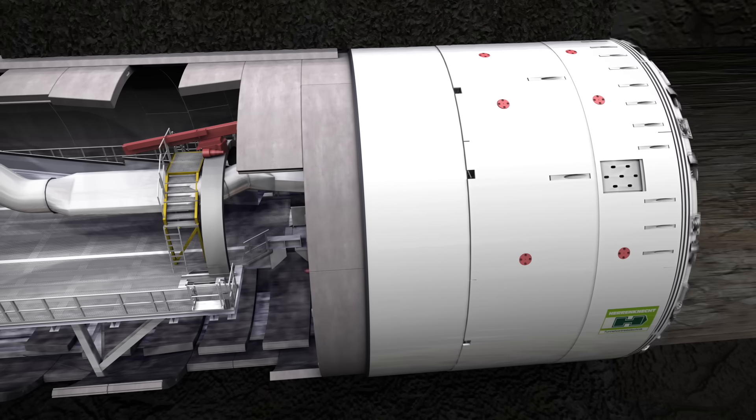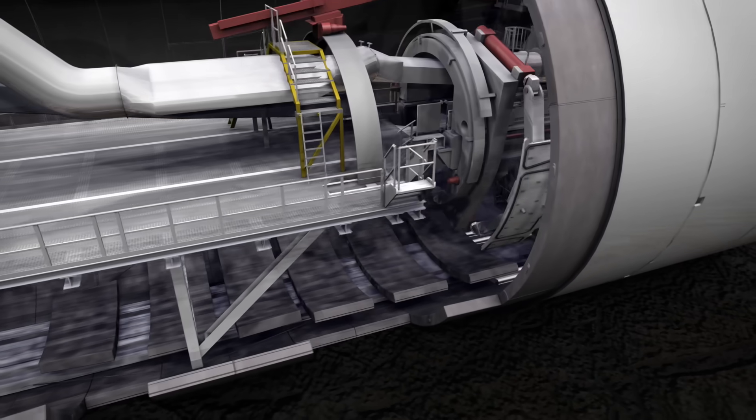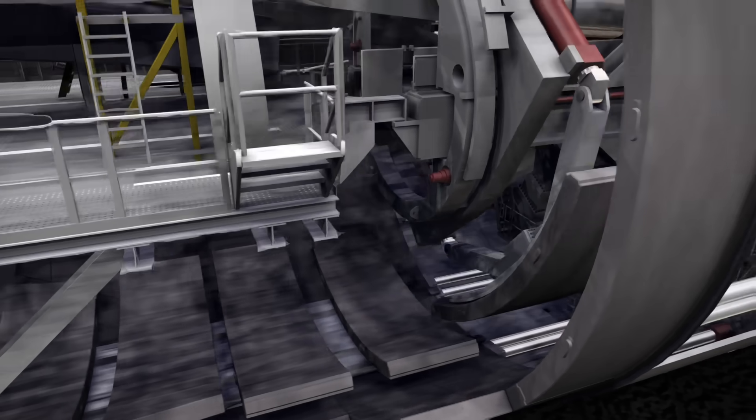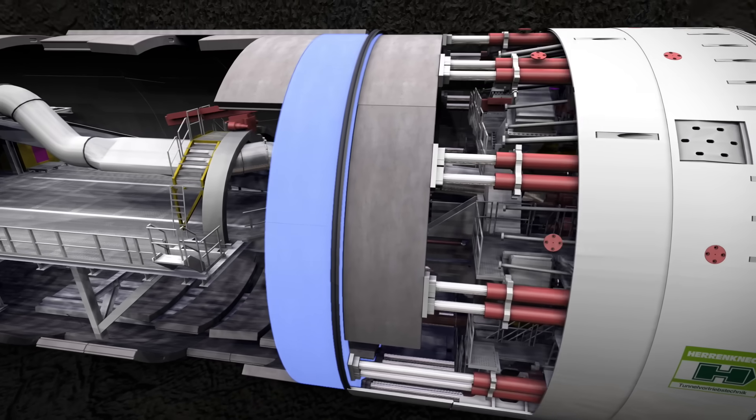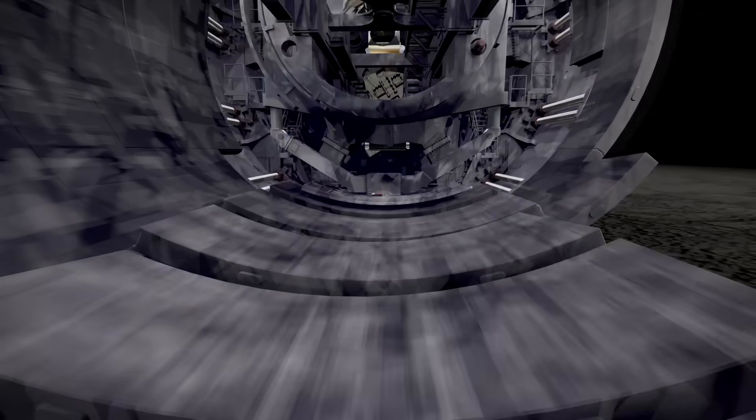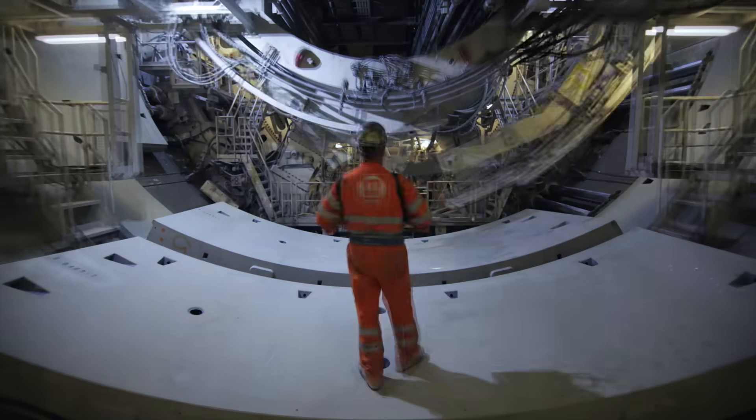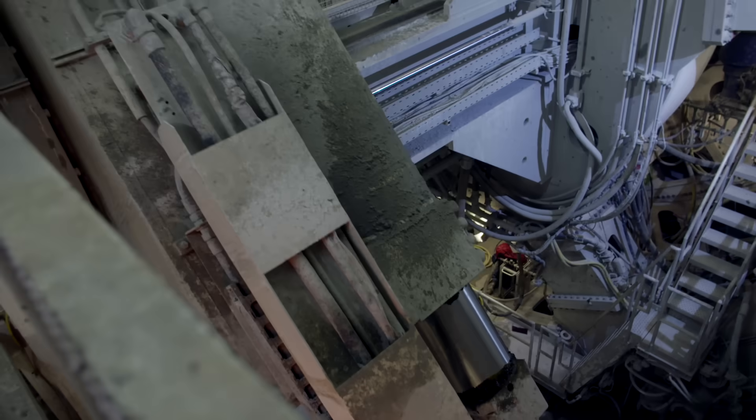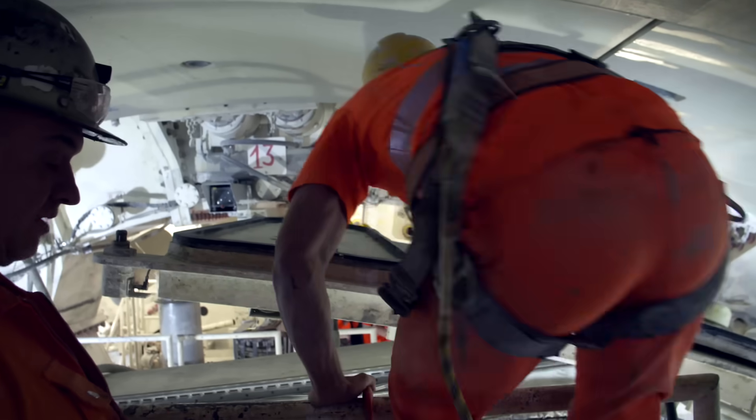The machine stops every 2 meters. Within the protection of its own shield, it builds a tunnel ring out of seven segments. With the segment construction, the tunnel is secured by the first ring closure directly after the excavation. The lifting plate works with a vacuum. The experienced teams build a complete segment ring in about 25 minutes.